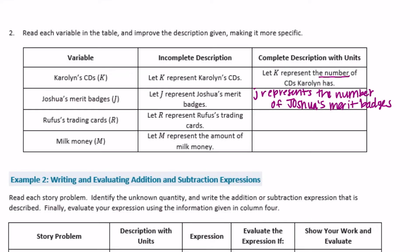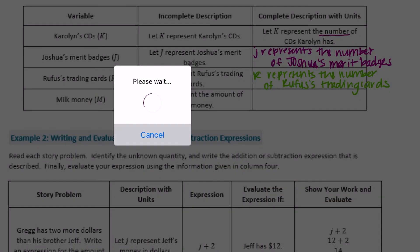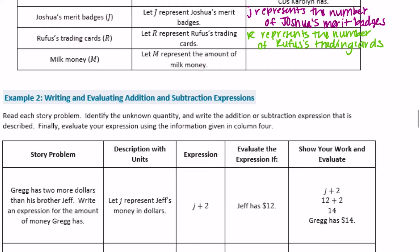For Rufus's trading cards, let R represent Rufus's trading cards — we make it more specific: let R represent the number of Rufus's trading cards. And the last one, milk money — let M represent the amount of milk money. Usually the amount of milk money is calculated in dollars, so M represents the amount of milk money in dollars.